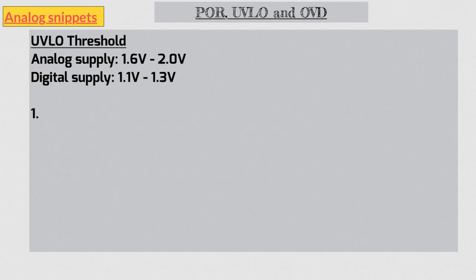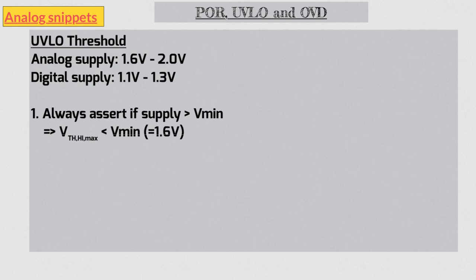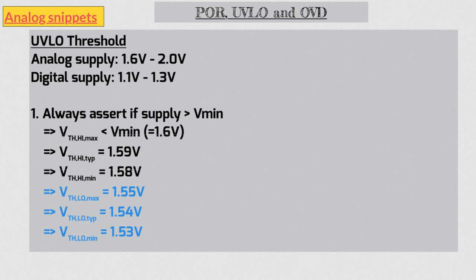One rather naive approach could be to always assert UVLO output if the supply is above the minimum value, and that means to ensure that the highest upper UVLO threshold is always below the Vmin. And following this logic, if we calculate all other thresholds for analog supply it will look like this. Obviously if we take this approach, we can have analog supply as low as 1.53 volts without ever having a UVLO error, and that means analog guys need to ensure their performance for a much lower analog supply. And for this very reason, this is not a good approach.